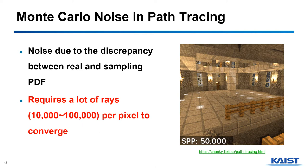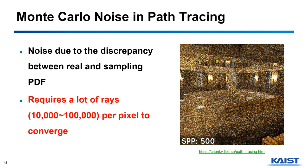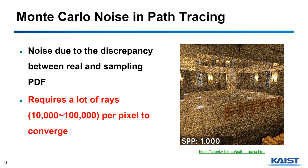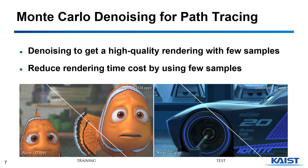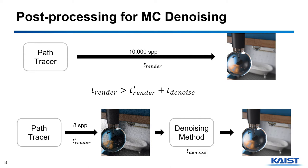Therefore, it requires a lot of rays to get a clean image, which will take too much time and resources. We say that path tracing converges slowly. Monte Carlo denoising is one of the methods that can remedy this slow convergence. This method aims to reduce rendering time using fewer rays while maintaining the rendering quality, substantially accelerating path tracing renders.